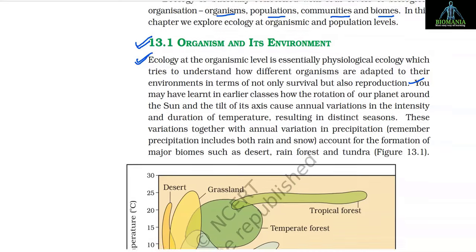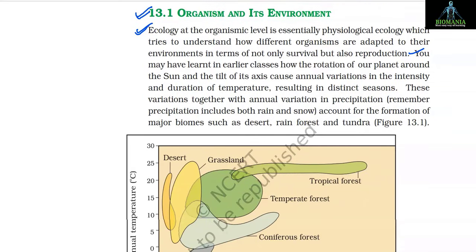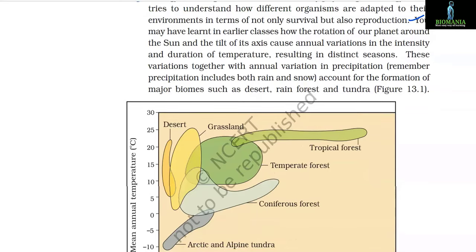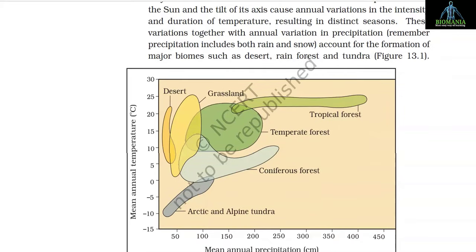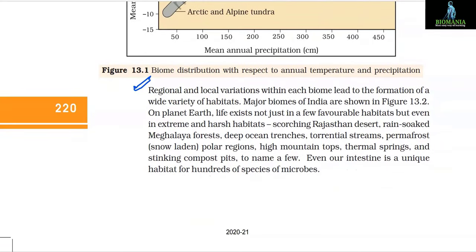The rotation of our planet around the sun and the tilt of its axis cause annual variation in the intensity and duration of temperature, resulting in distinct seasons. These variations, together with annual variation in precipitation, account for the formation of major biomes such as desert, rainforest, and tundra. Regional and local variations within each biome lead to the formation of a wide variety of habitats. Major biomes of India are shown in figure 13.2.